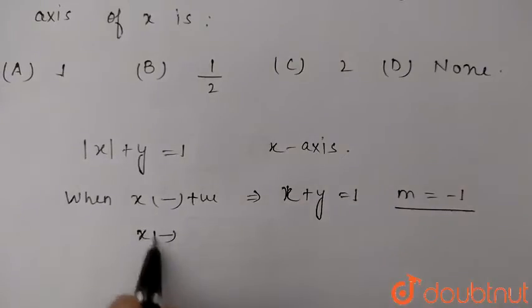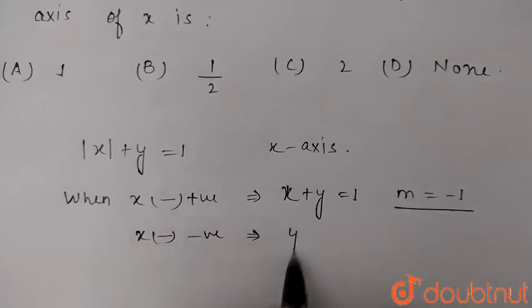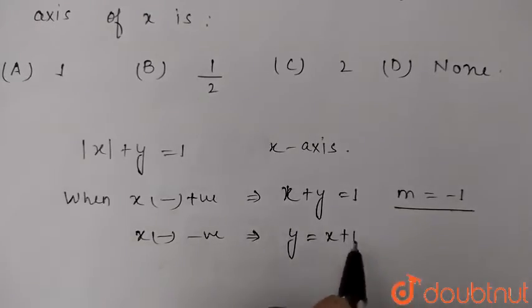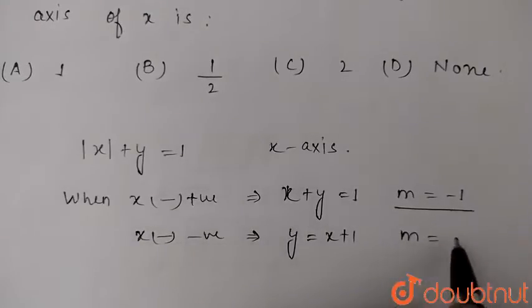When x is negative, we get y = x + 1, m = 1.